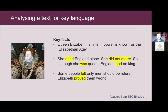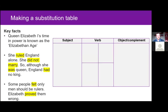I'm going to show you how you might do that. On the left you can see the text, and on the right a template of a substitution table. We've divided the table into three vertical sections: the subject, the verb, and the object or complement — the complement being the word or phrase needed to complete the meaning of an expression after the verb. So we have that basic structure.